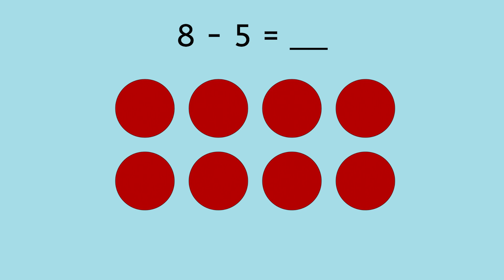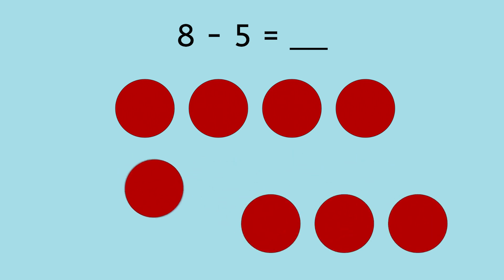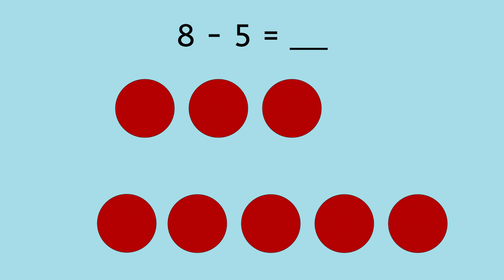So how many counters do we need to take away? Five. One, two, three, four, five. Great!